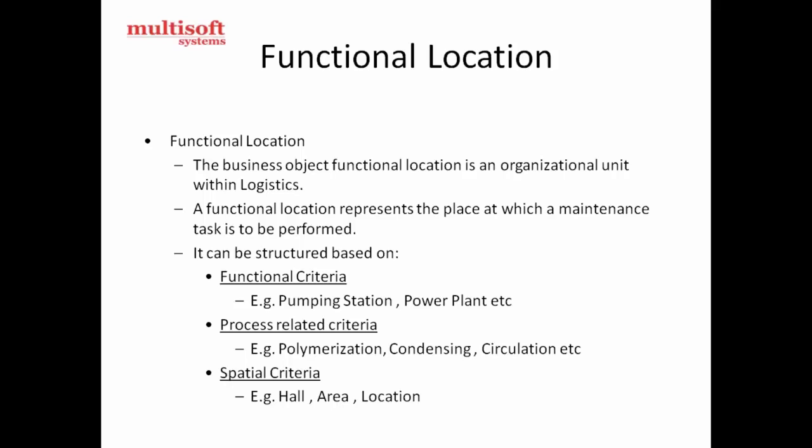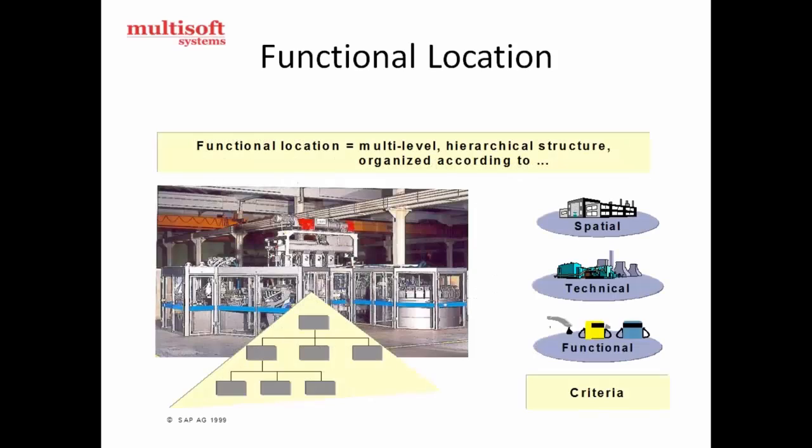Process-related criteria covers things like polymerization, condensation, circularization, or freezing — any part of the process. Spatial criteria includes hall, area, location, and buildings — all spatial elements where a physical space is needed.